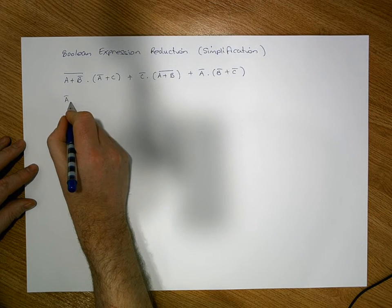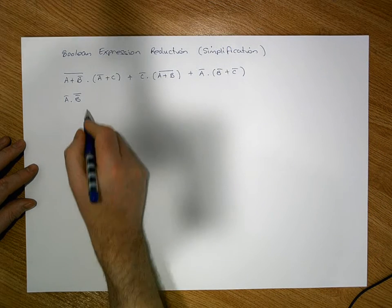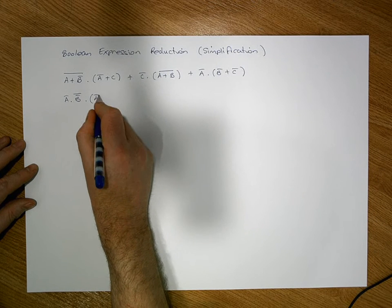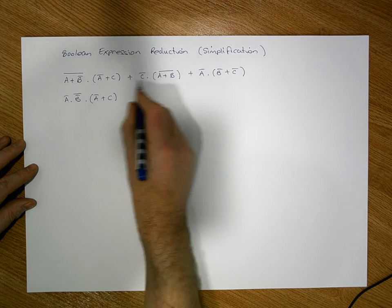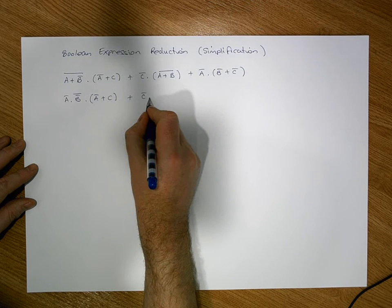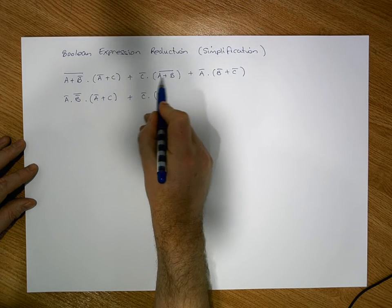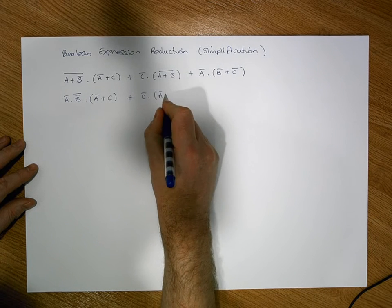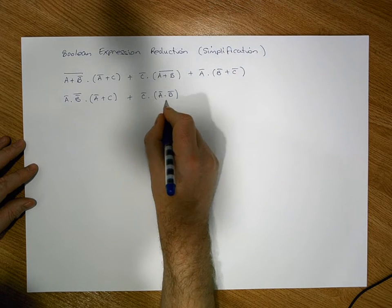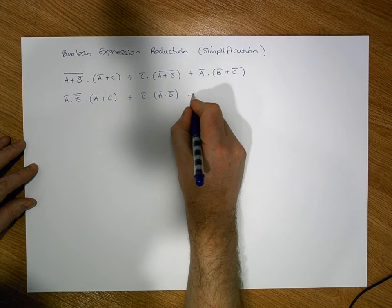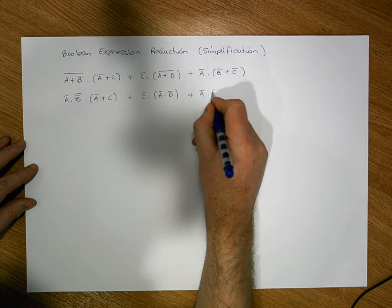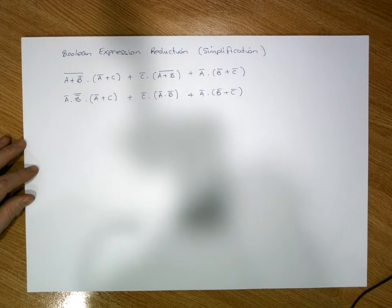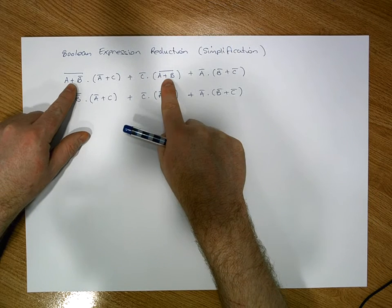Applying that here, the bar breaks and the OR flips to an AND, so this becomes a-bar AND b-bar-bar, and that needs to be ANDed against the term (a-bar OR c). Then over here I apply De Morgan's law again — break the bar, flip the OR to an AND — so this becomes a-bar AND b-bar. So after this first pass: where possible, convert ORs that have a negation over them into ANDs using De Morgan's law.